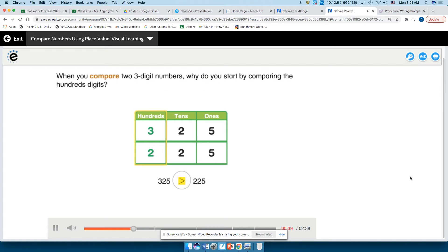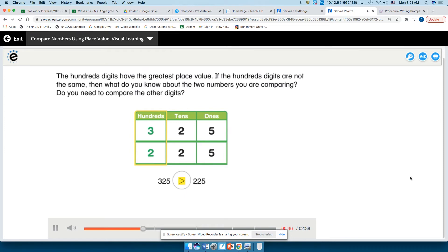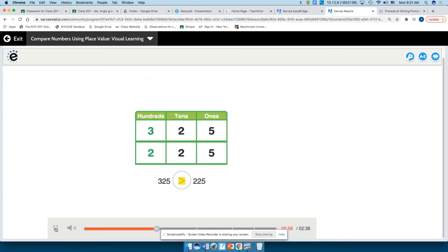When you compare two three-digit numbers, why do you start by comparing the hundreds digits? The hundreds digits have the greatest place value. If the hundreds digits are not the same, then what do you know about the two numbers you are comparing? Do you need to compare the other digits? The number with more hundreds is the greater number. You do not need to compare the other digits.